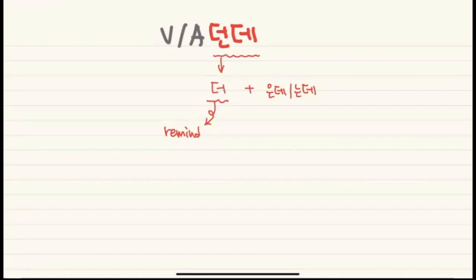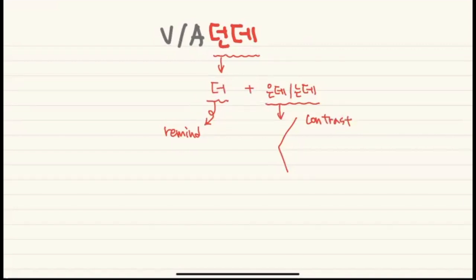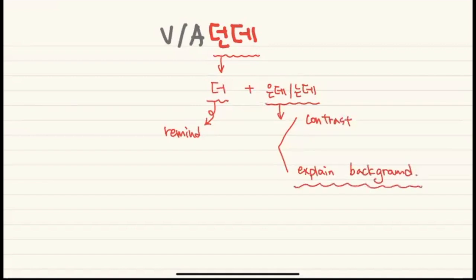은데/는데 has two functions. One is contrast — for example, he is tall but I'm short: 동생은 키가 큰데 저는 키가 작아요. The other function is explaining about the background. This concept doesn't exist in English so it's a little hard, but the basic function is explaining background information.